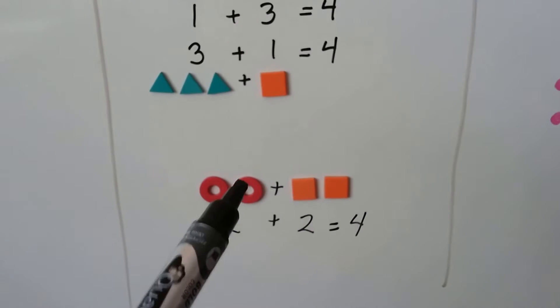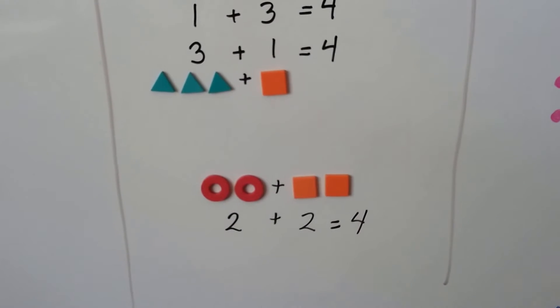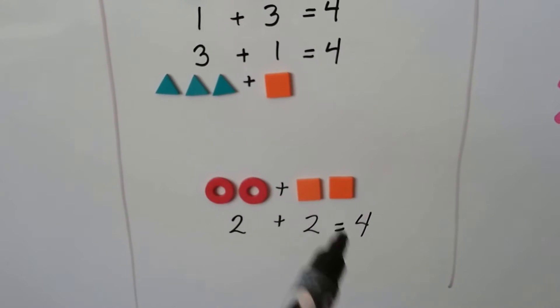Here we have two red o's and two orange squares. Two plus two is four.